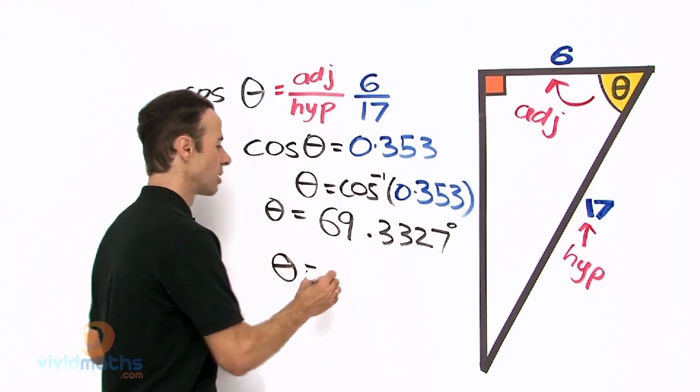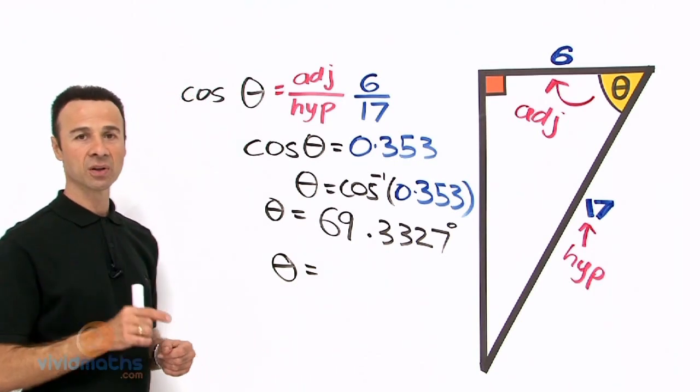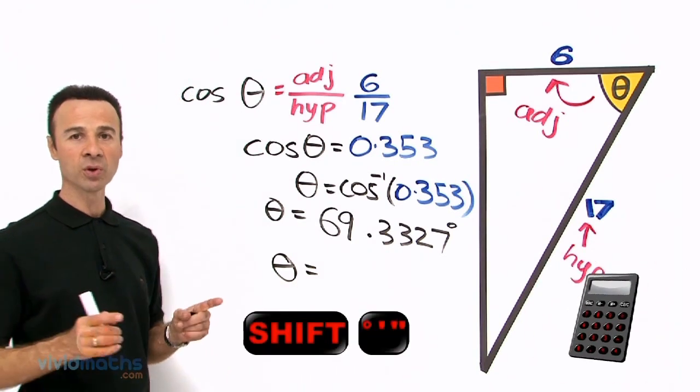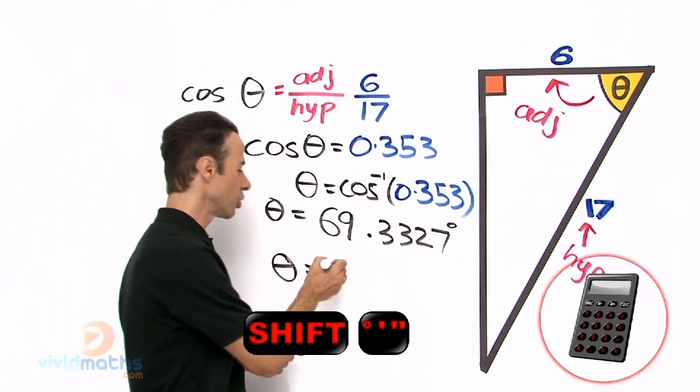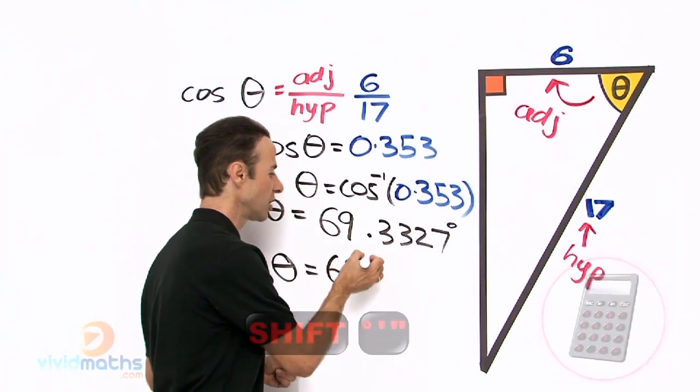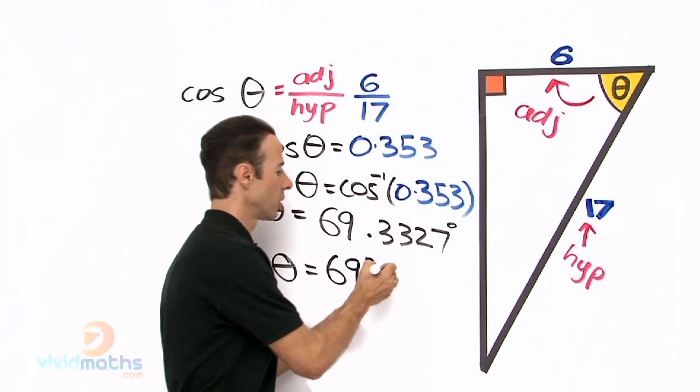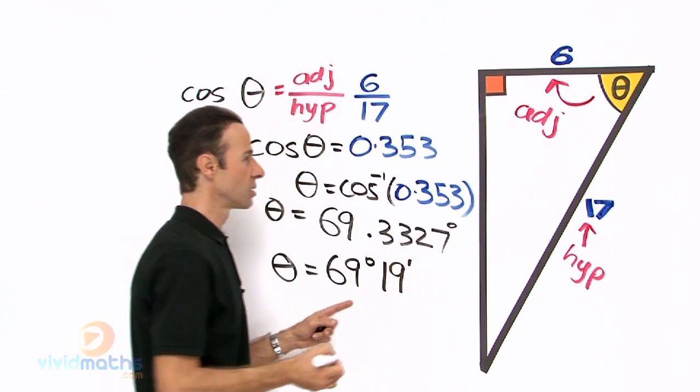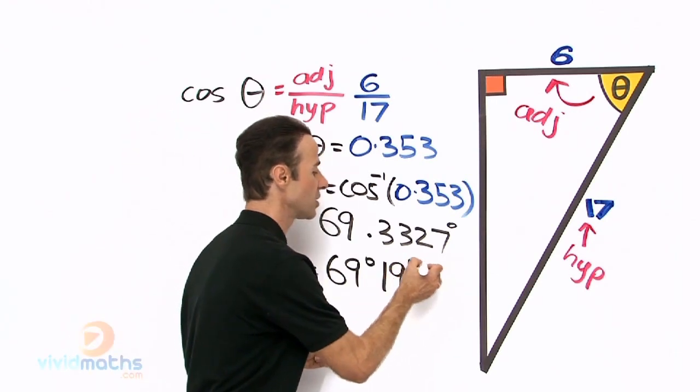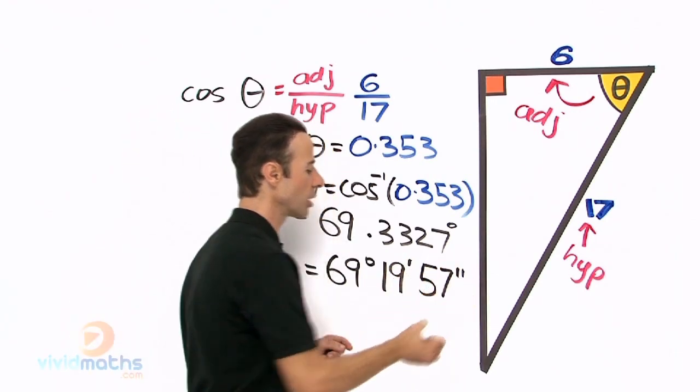So let's do that. We go now shift degrees, minutes, seconds. That will give you degrees, minutes, seconds. By pressing that button you will end up with 69 degrees, 19 minutes, and 57 seconds.